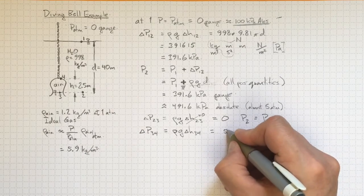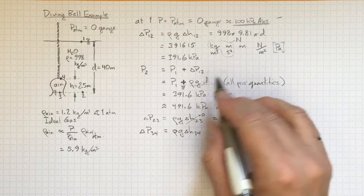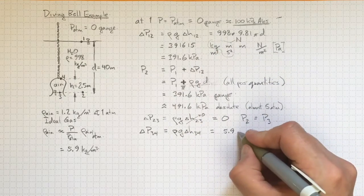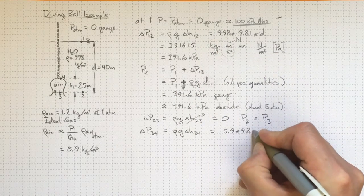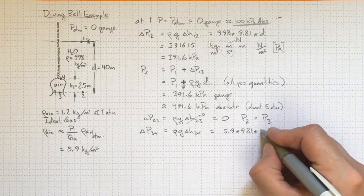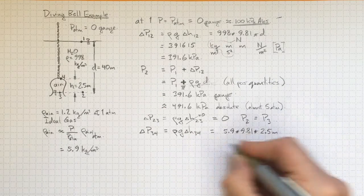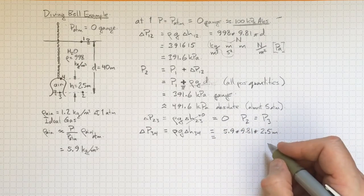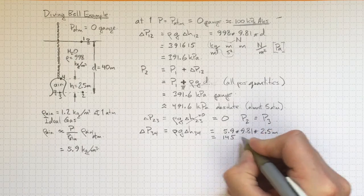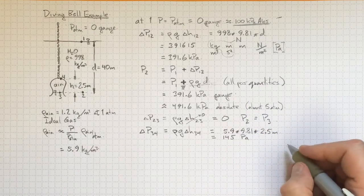So we'll have 5.9, much lower than the 998 that we had up here for the water, times 9.81 acceleration due to gravity times h, which is 2.5 meters. And if I calculate that out, I get a value of 145 and the units are still pascals.